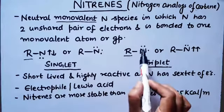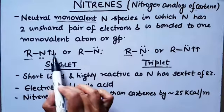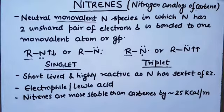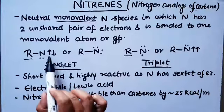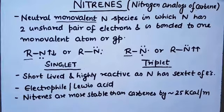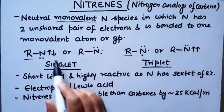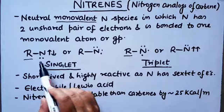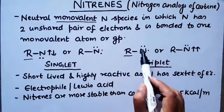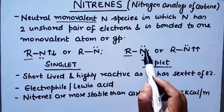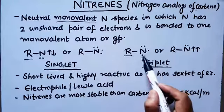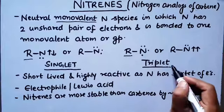Nitrenes are of two types: singlet and triplet. If the two non-bonding electron pairs are both paired, we call it singlet nitrene. Triplet means one pair is paired and one electron is unpaired — so we call it triplet nitrene.